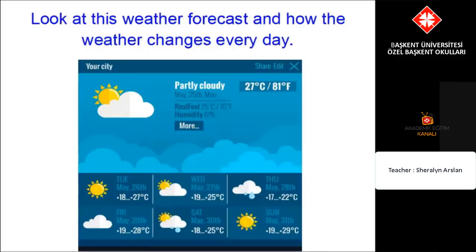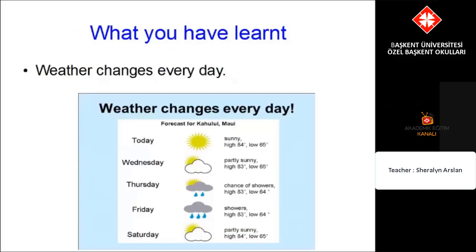Look at this weather forecast and how the weather changes every day. On Tuesday for example it is sunny and 27 degrees, but on Thursday it is rainy and 22 degrees. One day is hot and sunny, the other is cooler and rainy. The weather changes every day. You have learnt that the weather changes every day.